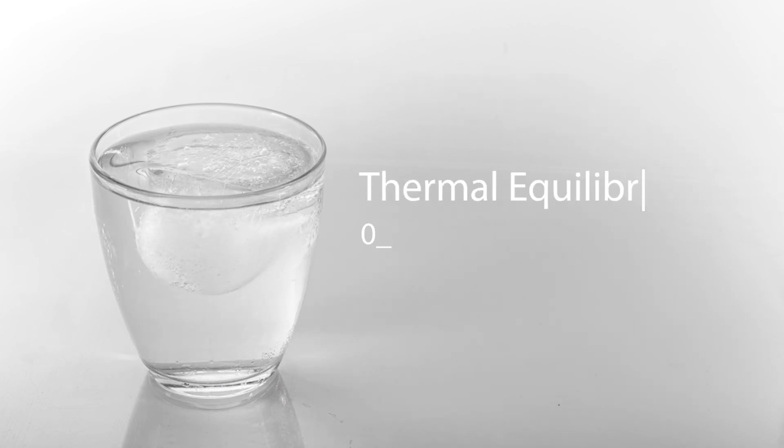This point of equilibrium occurs at zero degrees Celsius. At this temperature, the amount of water and ice can stay constant, as long as no heat is introduced or removed. This thermal equilibrium is therefore known as both the freezing and the melting point of water.